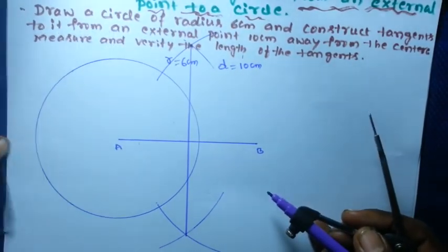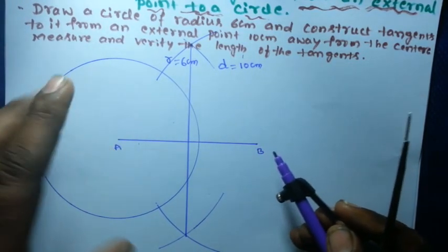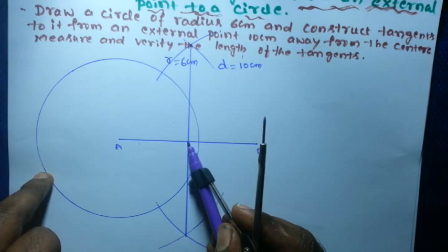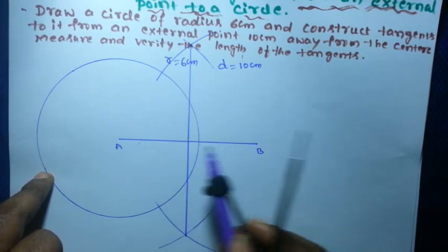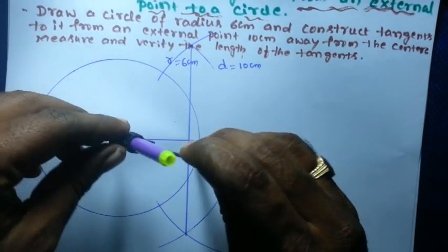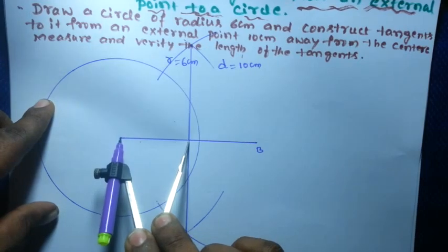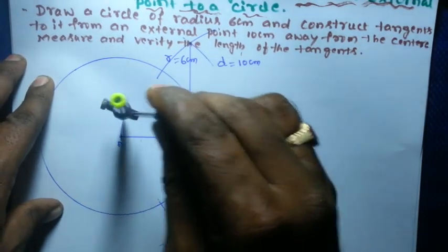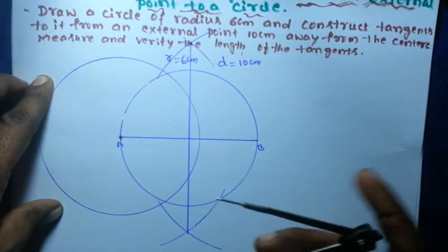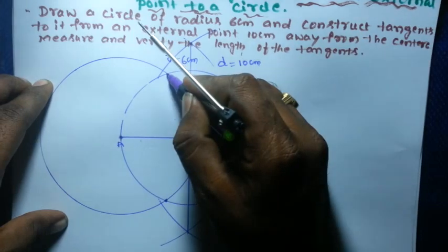This line is called the perpendicular bisector. Since AB is 10 centimeters, the midpoint divides it into two equal parts of 5 centimeters each. Now take this midpoint as center with radius equal to 5 centimeters — the distance to A or B — and draw a second circle.